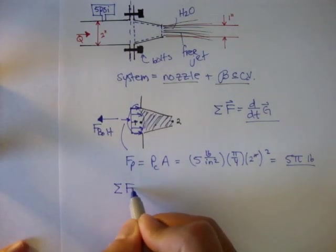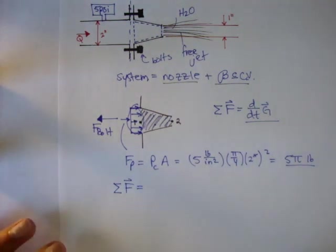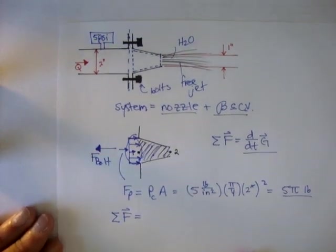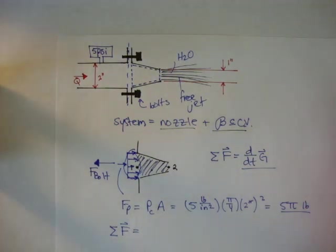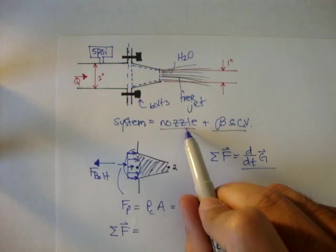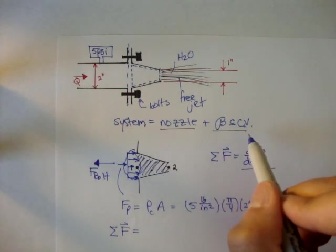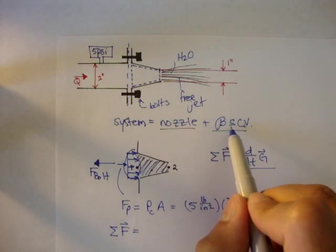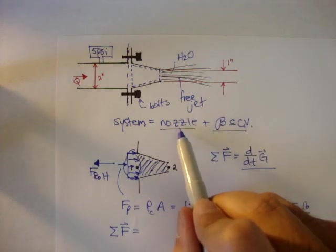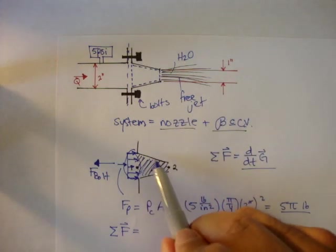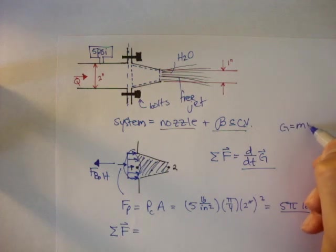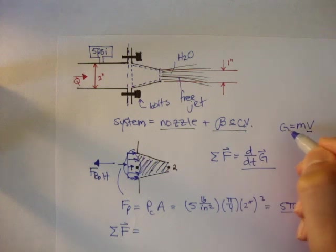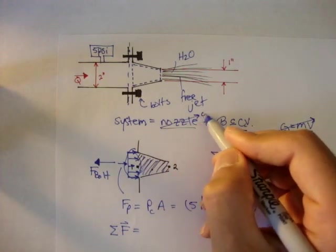And we said that the forces are equal to the momentum of the system. But think about it this way. Momentum is mass times velocity. And both the nozzle and body of water do have a mass. And the water is moving, so the body that's contained inside the control volume has a velocity. But is the nozzle moving? Well, no, it's being held by the bolts. It's not moving. And if we said momentum is equal to mass times velocity, well, if the velocity of the nozzle is zero, then that means the nozzle doesn't have any momentum. It's not moving.